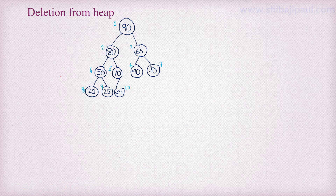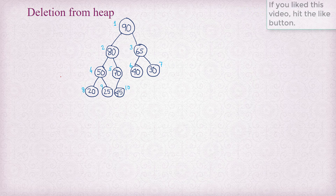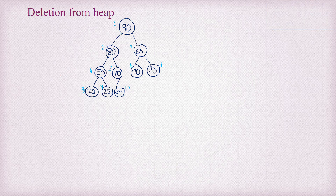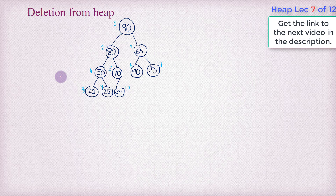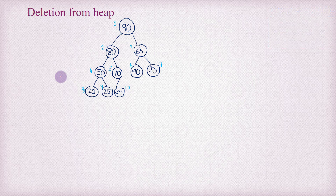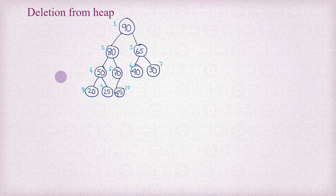When we delete a max heap, we delete the root element and get the largest number. The second largest number actually occupies the root immediately after the deletion. So we need to do some mechanism so that the second largest number occupies the root, and on subsequent deletion we always get the next largest number. For a min heap, if we delete the root, we need a mechanism so that the second smallest number occupies the root.